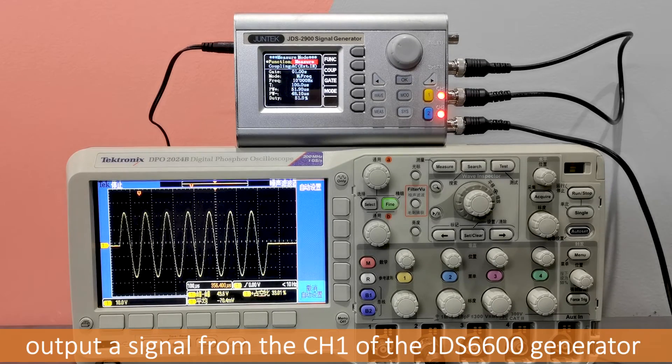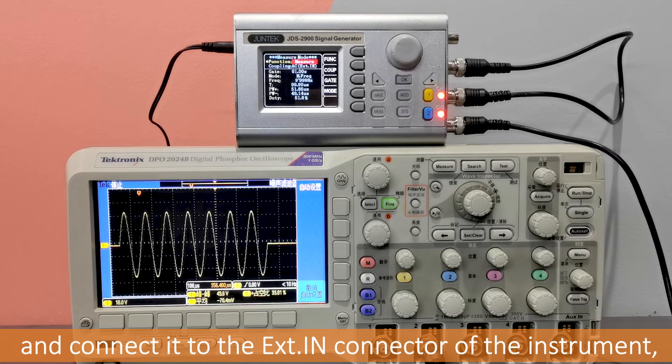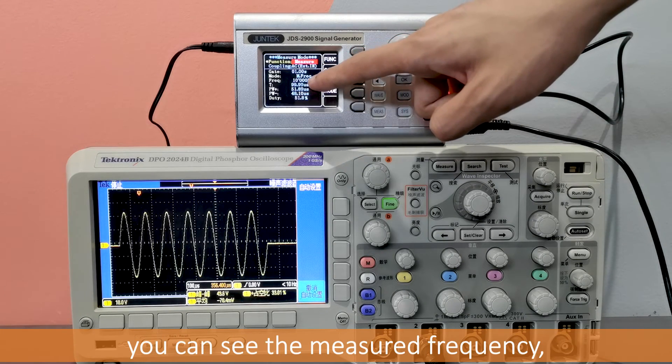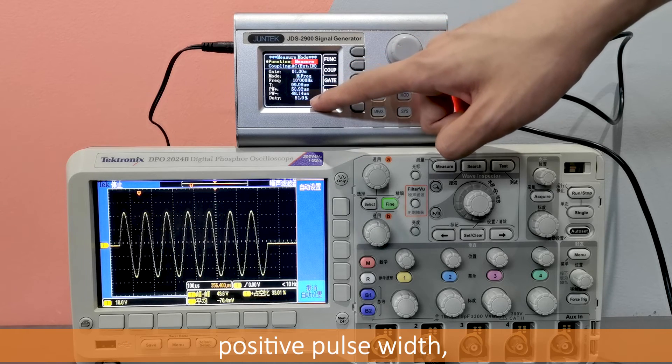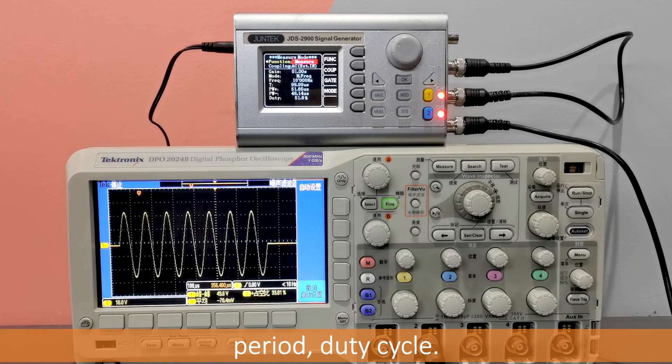Measurement function. Output a signal from the CH1 of the JDS2900 generator and connect it to the EXT.IN connector of the instrument. Press the MIS key to enter the measurement function. You can see the measured frequency, positive pulse width, negative pulse width, period, duty cycle.